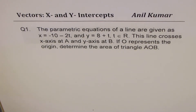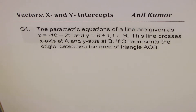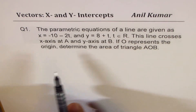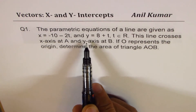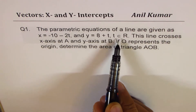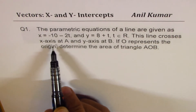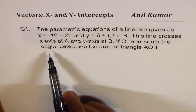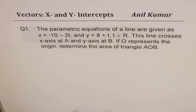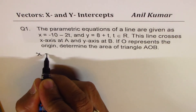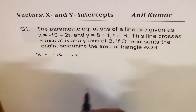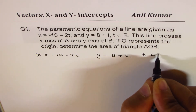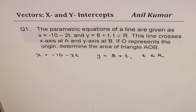Now let us have a few examples on finding x and y-intercepts and their application. Question number one: the parametric equations of a line are given as x equals to minus 10 minus 2t and y equals to 8 plus t, where t belongs to real numbers. This line crosses the x-axis at A and the y-axis at B.